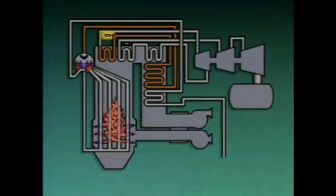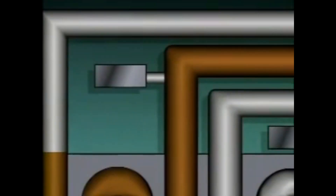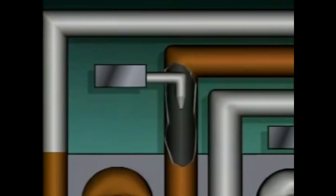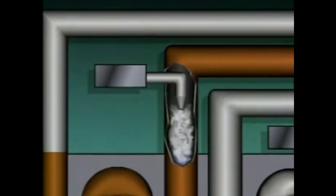This boiler has an attemperator, or desuperheater, located between the primary and secondary superheaters. The desuperheater keeps the steam from becoming so hot that it damages the superheater tubes. If the steam gets too hot, the desuperheater sprays water into the steam flow. This water immediately flashes to steam and mixes with the steam that is already there, resulting in a decrease in the temperature of the superheated steam.